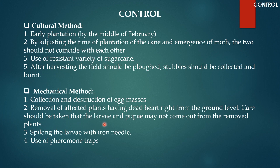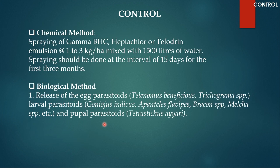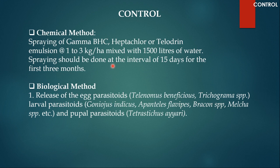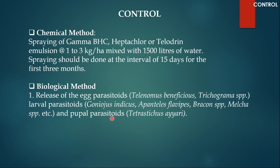For chemical control, spraying gamma-BHC heptachlor or telodrin emulsion at the rate of 1 to 3 kg per hectare mixed with 1500 liters of water can be very effective. These are organochlorine pesticides. Spraying should be done at intervals of 15 days for the first 3 months. Since organochlorine pesticides persist in nature for a long time, larvae coming out of one stem to attack another plant will ingest them and die. Biological methods using egg parasitoids, larval parasitoids, and pupal parasitoids are also preferable, since chemicals are not good for the crop or consumers.